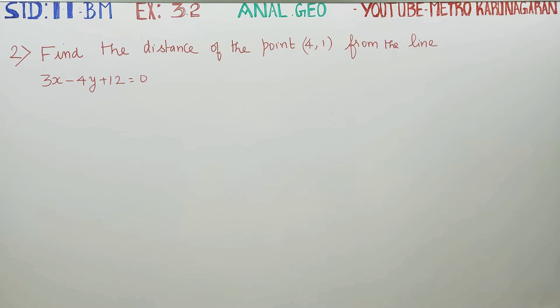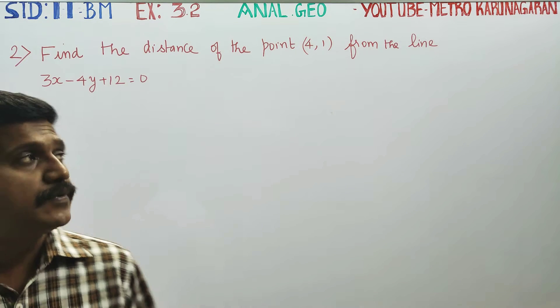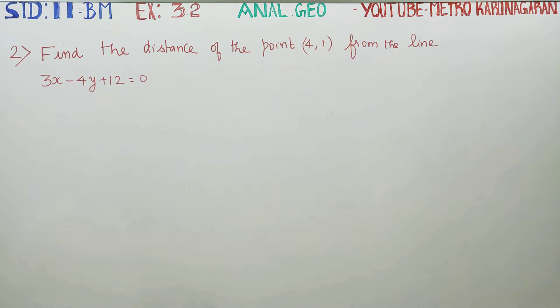Dear 11th standard students, in exercise number 3.2, sum number 2: find the distance of the point (4, 1) from the line 3x - 4y - 12 = 0.